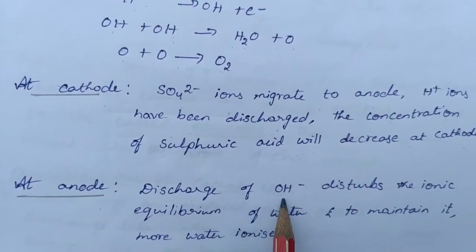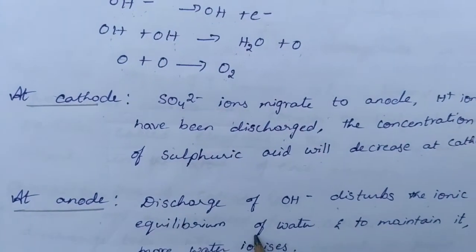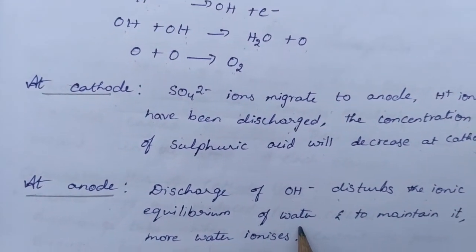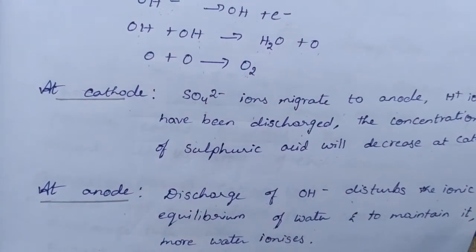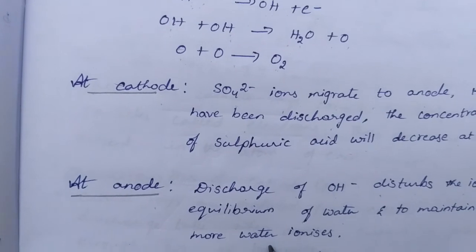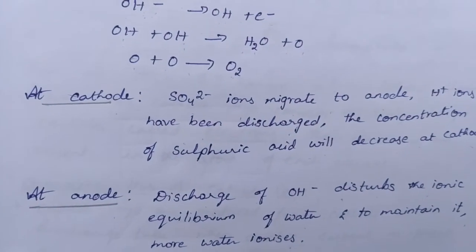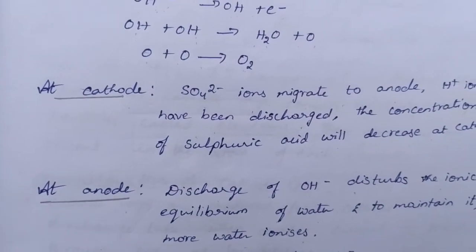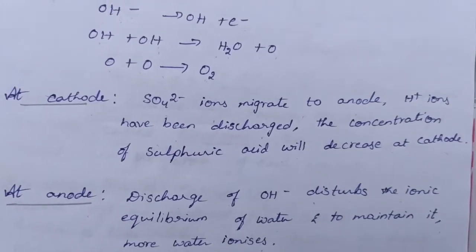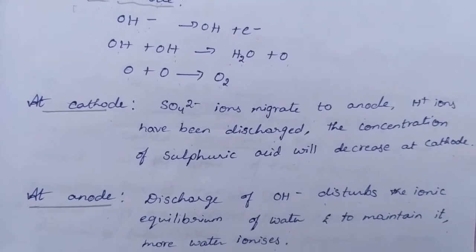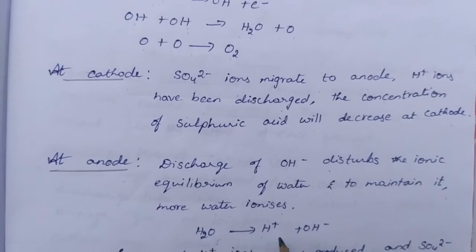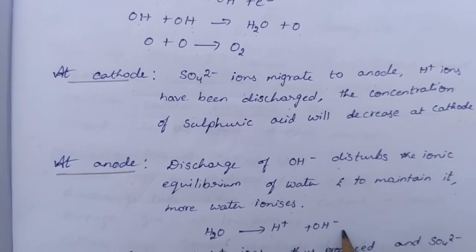At anode, discharge of OH- disturbs the ionic equilibrium of water. To maintain this equilibrium, more water will be ionized. The water present, since we are using sulfuric acid and water, will again ionize as H+ and OH- ions.